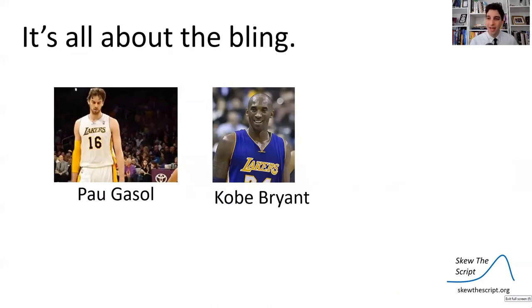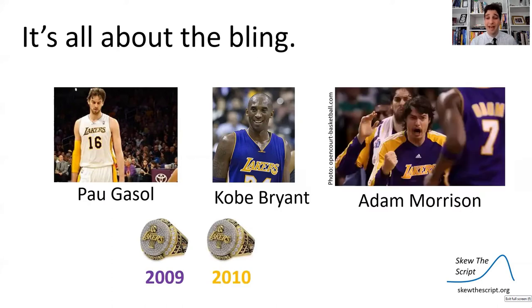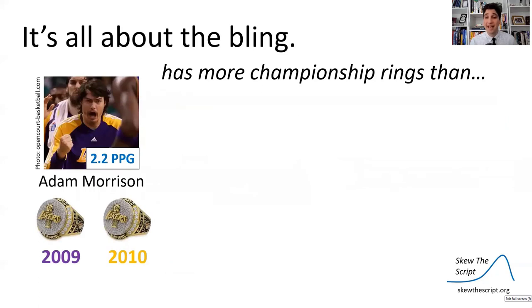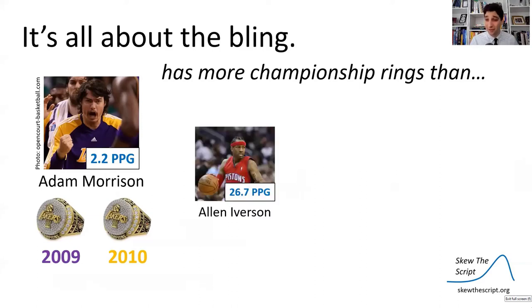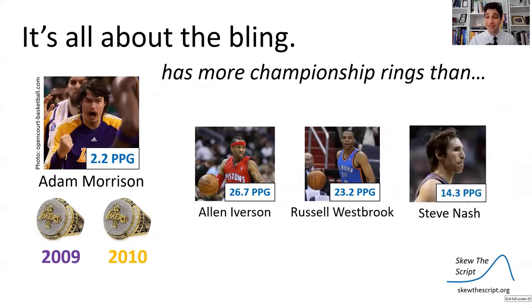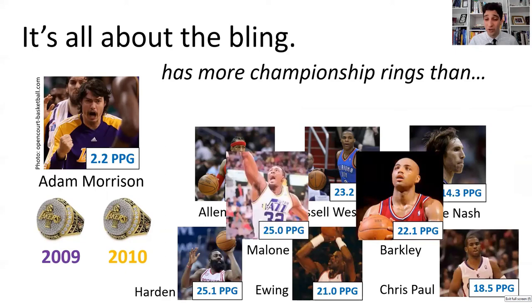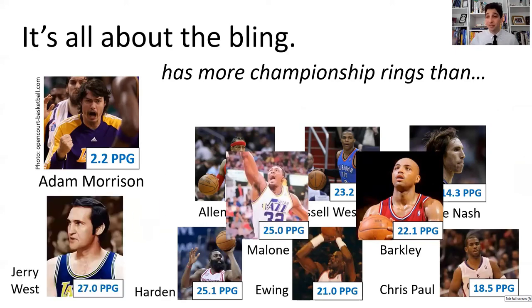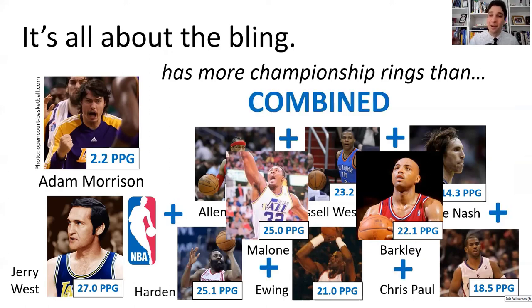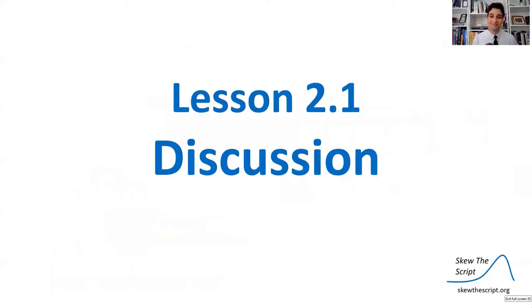One thing to consider: in the NBA it's all about the championships. In 2009 and 2010, the Lakers won back-to-back titles with Kobe and Pau Gasol. Adam Morrison was on both rosters — mostly on the bench — so he has two championship rings. That means Morrison, with his 2.2 points per game, has more rings than Allen Iverson, Russell Westbrook, Steve Nash, James Harden, Patrick Ewing, Chris Paul, Charles Barkley, Karl Malone, and Jerry West — whose silhouette is literally the NBA logo — combined.